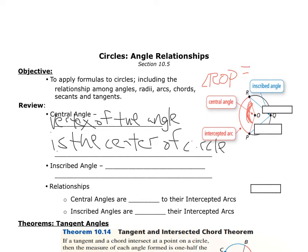Remember, the central angle is always going to be equal to its intercepted arc. So arc RP would be this arc right here. That means if angle ROP equals 120 degrees, then arc RP also equals 120 degrees.